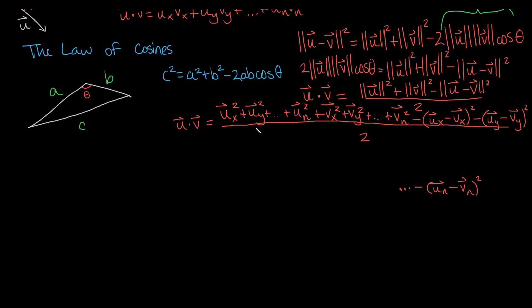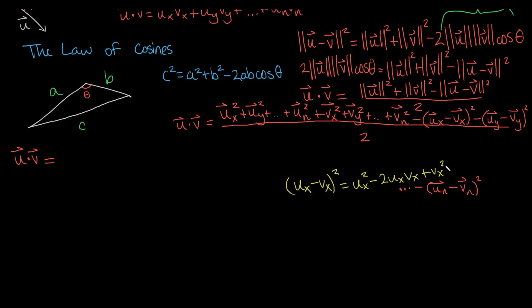We can rewrite and see that there are a lot of things that cancel. The key observation is that when we expand a term like (ux − vx)², it equals ux² − 2ux·vx + vx². We have to remember we're subtracting all of these, so all the terms go negative.